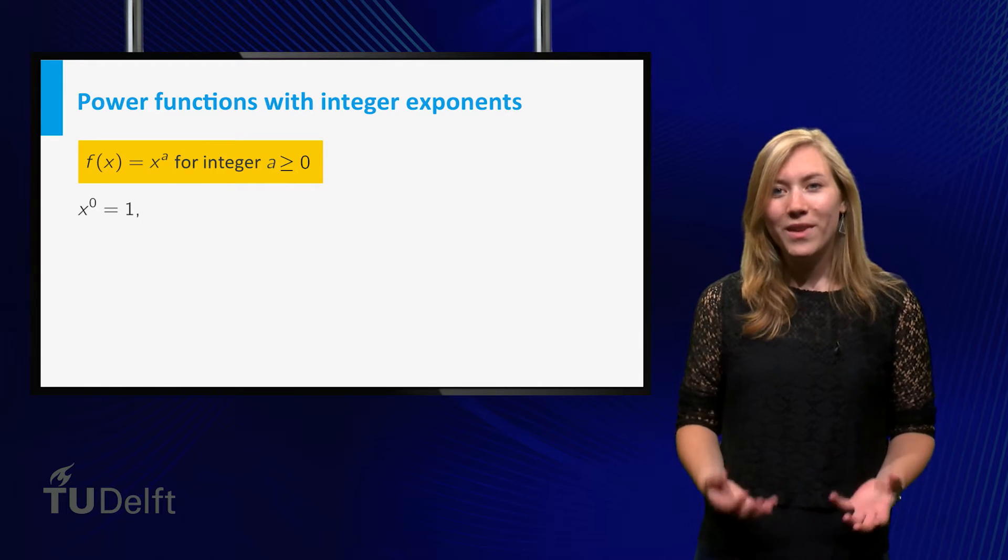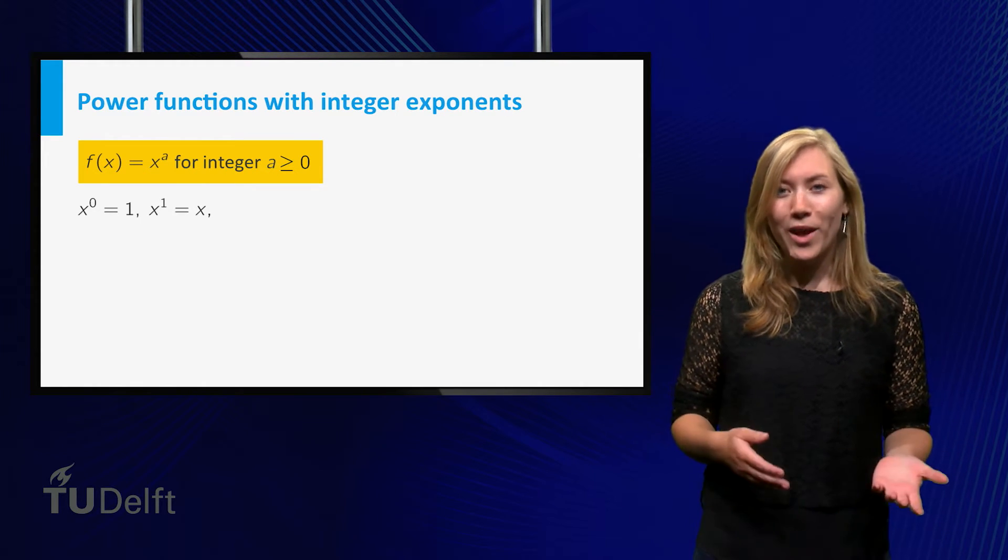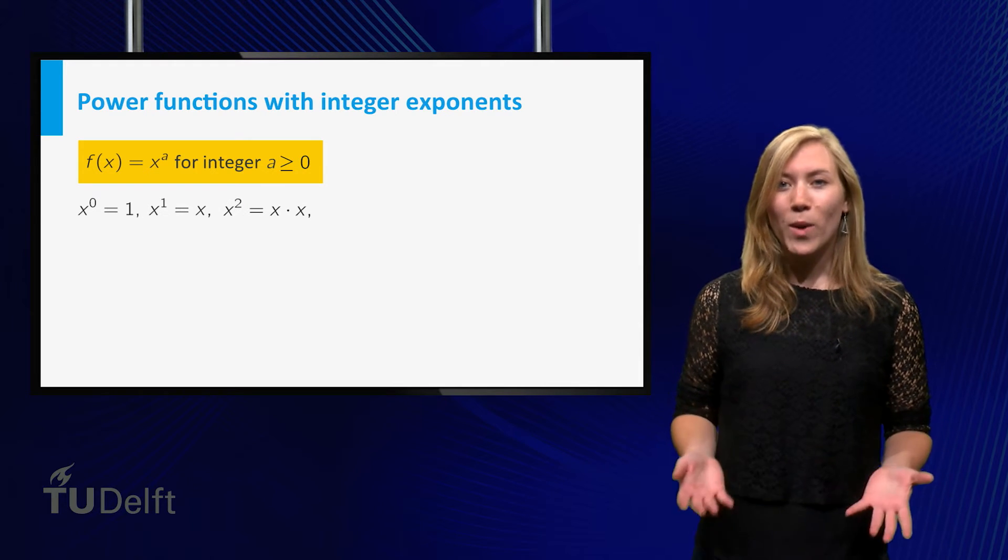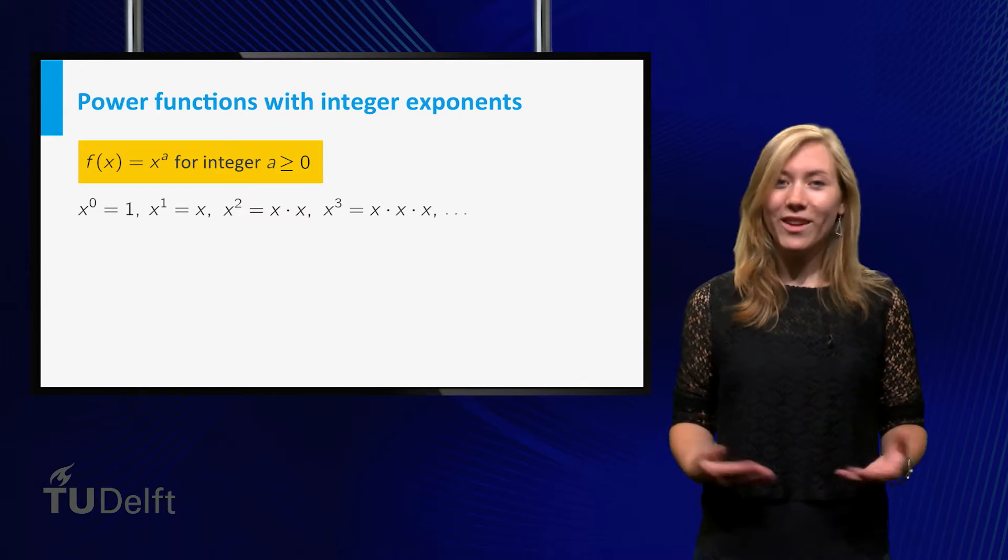For a is 0, it is just the constant 1. For a equals 1, we have x. For a equals 2, we have x squared. For a equals 3, we have x cubed, etc.